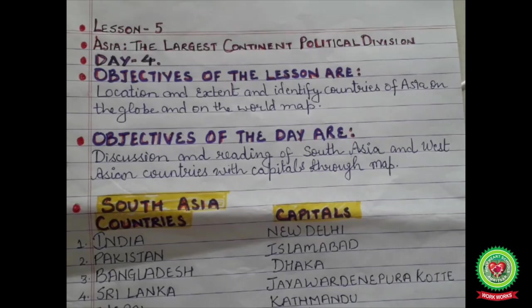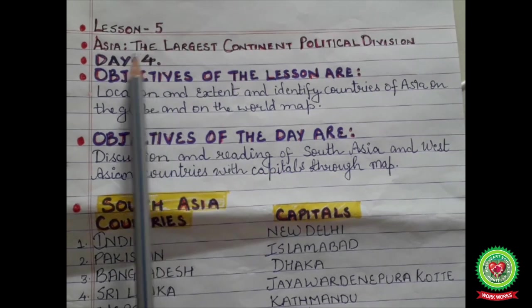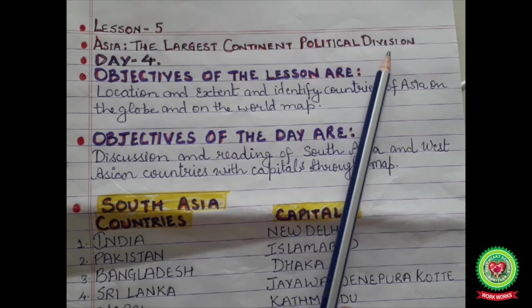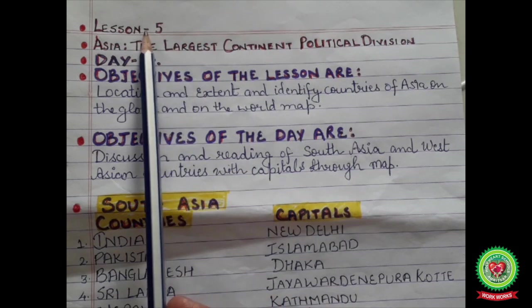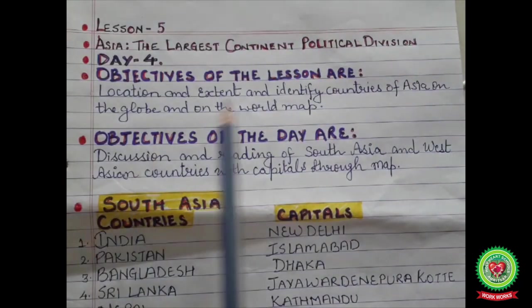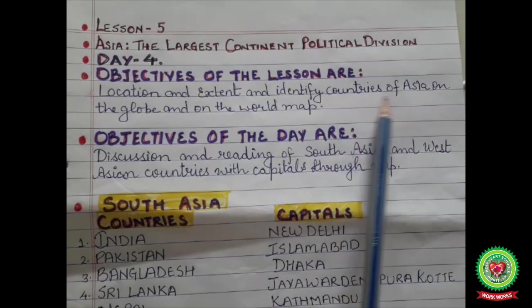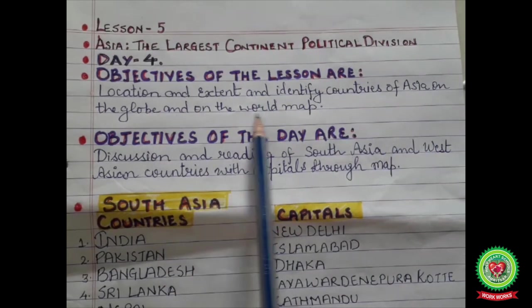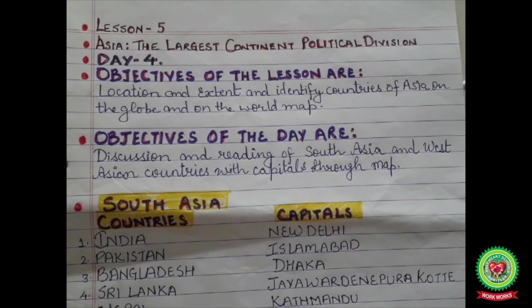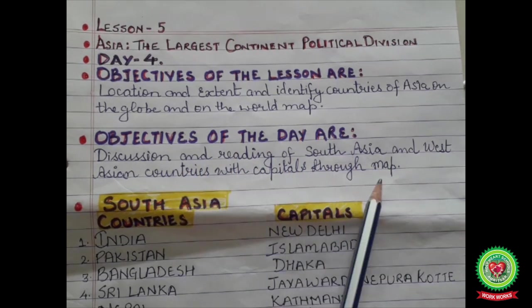Hello students, welcome to the geography class. Today I am going to start my fourth lecture with the same topic: Asia, the largest continent — political division. This is lesson number five of your geography book. The objectives of the lesson are location and extent, and to identify countries of Asia on the globe and on the world map. The objectives of the day are discussion and reading of the South Asia and West Asian countries with capitals through map.